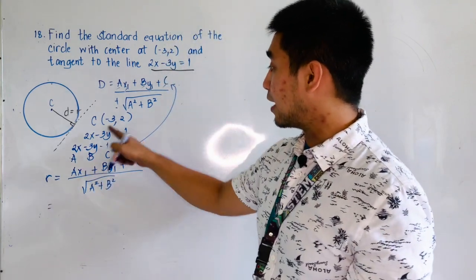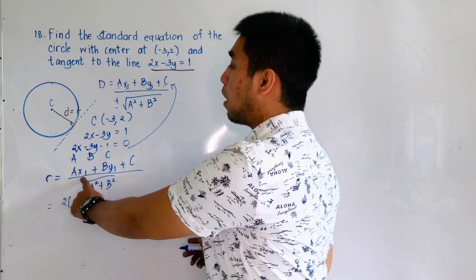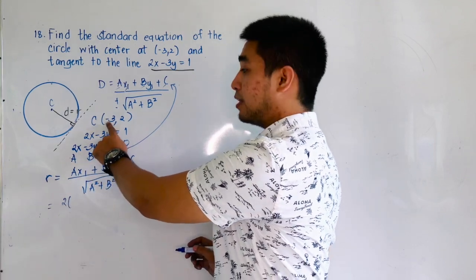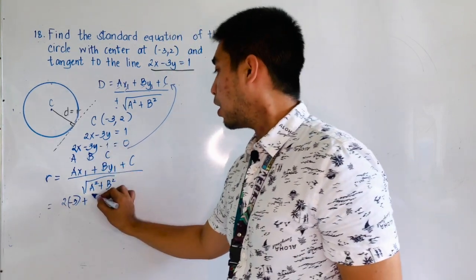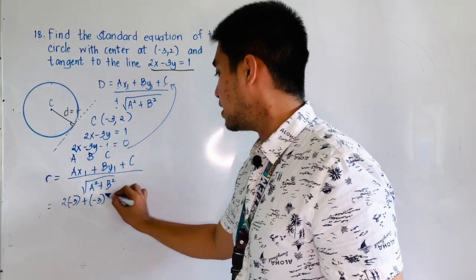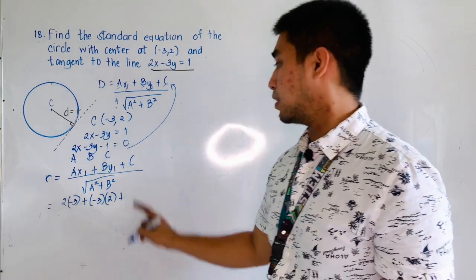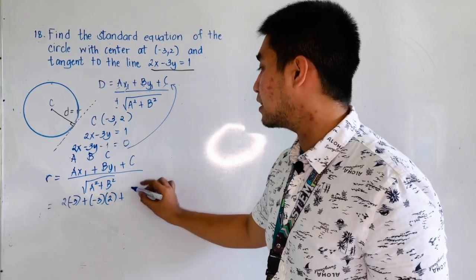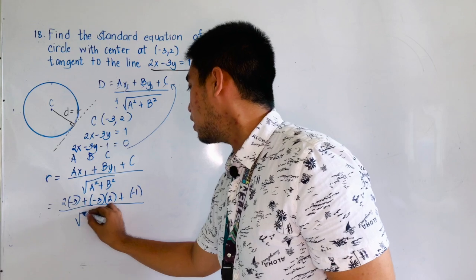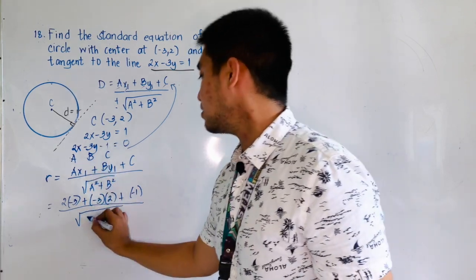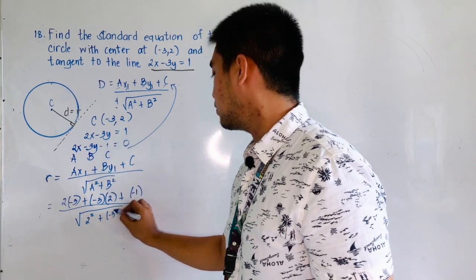Our a is 2, and x₁ — the x-coordinate of the center — is negative 3. Our b is negative 3, and y₁ is positive 2. Our c is negative 1. The denominator is the square root of a squared plus b squared, which is the square root of 2 squared plus negative 3 squared.